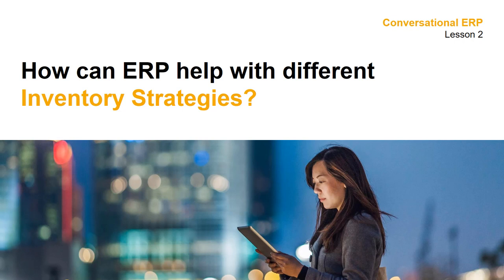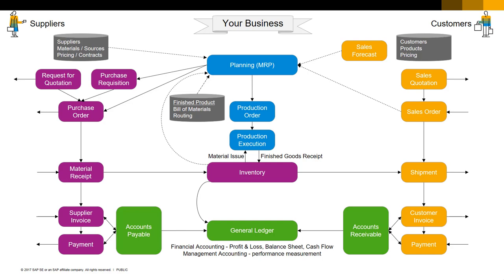As a reminder, here's the diagram of our core ERP system that we drew together in Lesson 1 of this course. It's got everything we need to run our business. Let's zoom in on inventory.